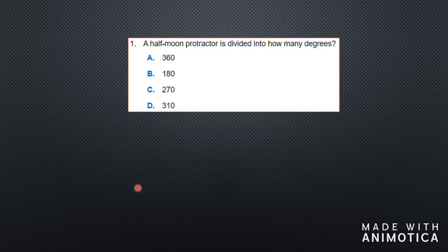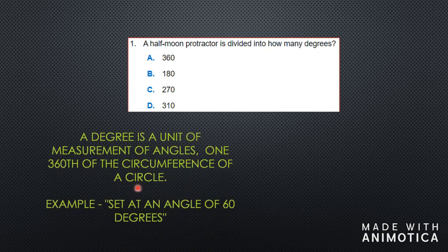The first question says: a half moon protractor is divided into how many degrees? A protractor is either a circular or semicircular tool and it measures degrees. A degree is a unit of measurement of angles — different increments that add up to 360 degrees, so each increment is one of 360 degrees.